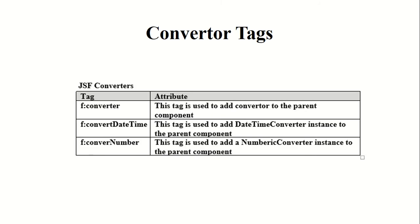These are the converter tags used in JSF. First, f:converter — this tag can be added to any user interface component or any parent component to add the converter. We have f:convertDateTime, which will convert a string into a date. And f:convertNumber, which will convert a string into a number. So whatever values we type in a web form will be in the form of a string; to convert that to an object, we use a converter tag.